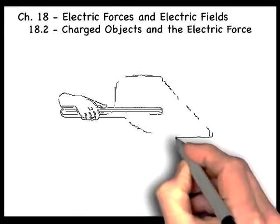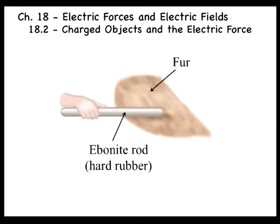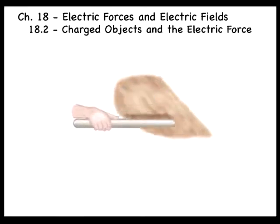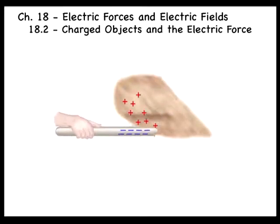Such separation of charge occurs often when two unlike materials are rubbed together. For example, when an ebonite rod is rubbed against fur, some of the electrons from atoms of the fur are transferred to the rod. The ebonite becomes negatively charged, and the fur becomes positively charged.